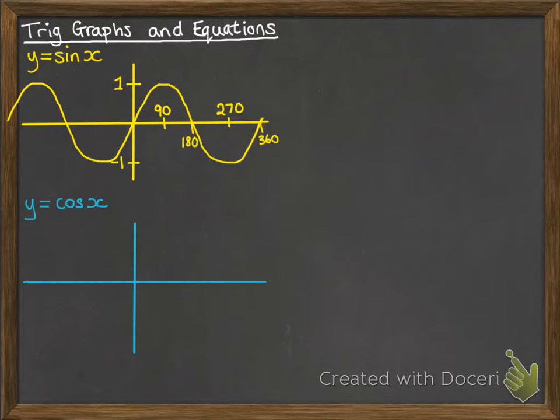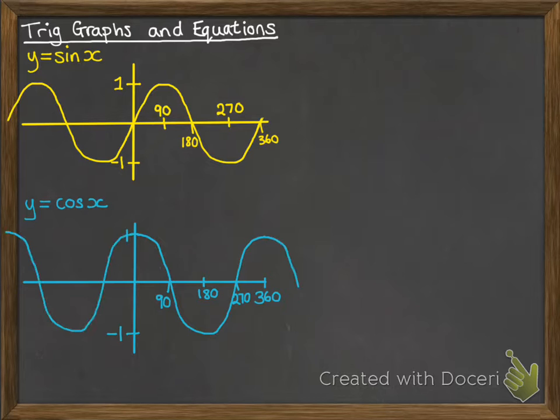Now if we talk about the y equals cos x graph, that is very similar. It's also a wave pattern but it's not quite the same. This one starts at 1 instead of starting at 0 in the origin. It's got a maximum of 1 and minus 1 again. It goes through the x-axis at 90 and 270 and repeats every 360 degrees, just like the sine curve does.